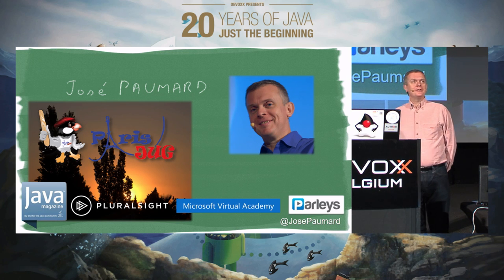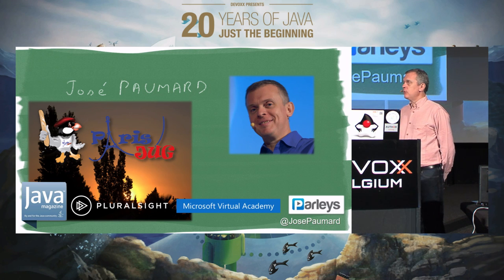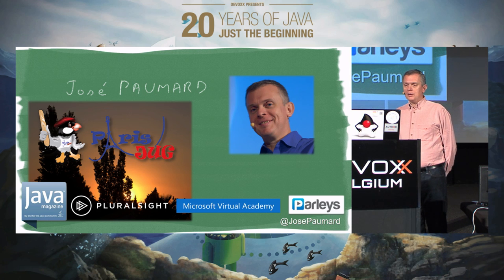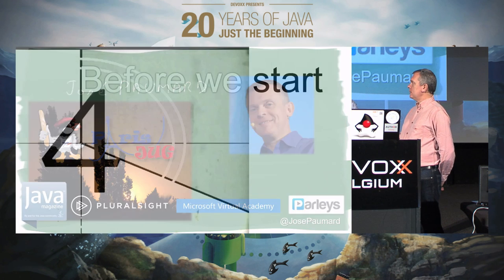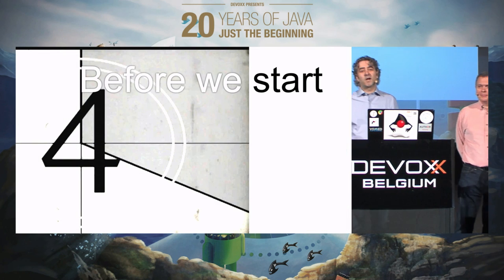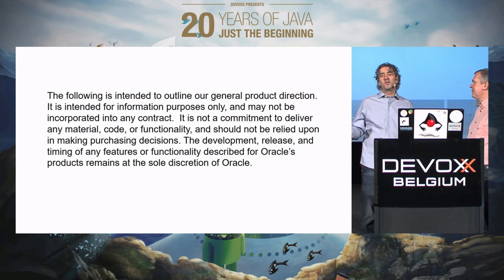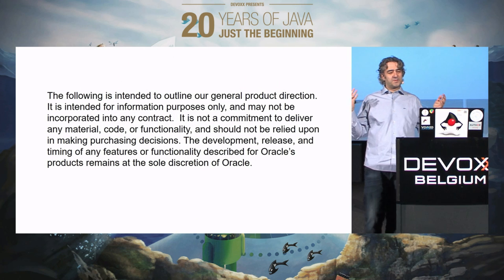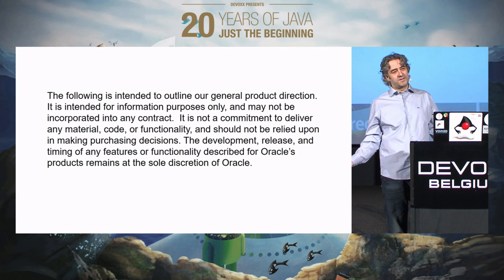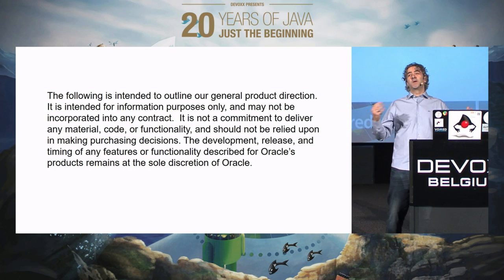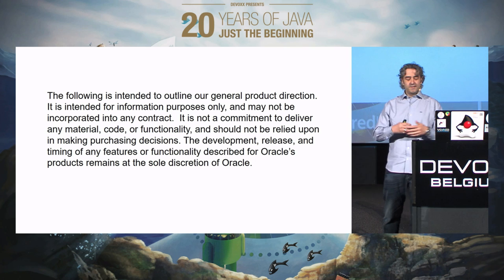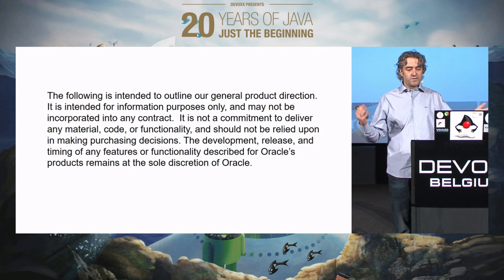I have resources on Java Magazine, on Pluralsight which is a US-based training site, and also on Microsoft Virtual Academy where I made a Java EE course. So, before we start, some logistics. This is the standard Safe Harbor Statement slide — the basic idea is that you shouldn't make any purchase decision based on what we say today. Having said that, I will not talk about products, so there is nothing to buy.